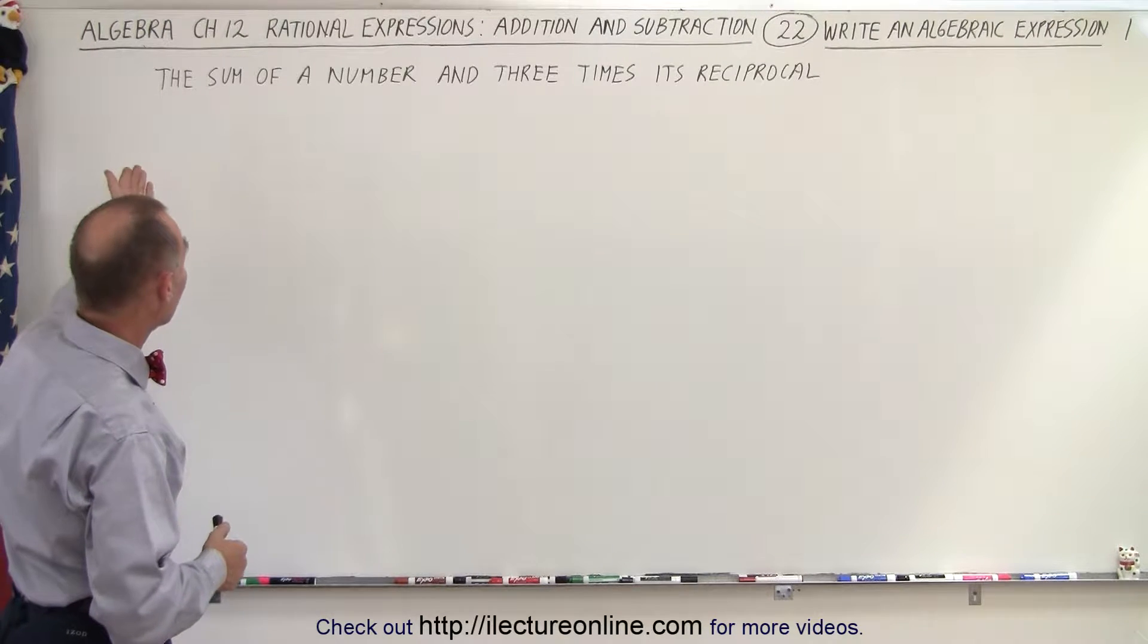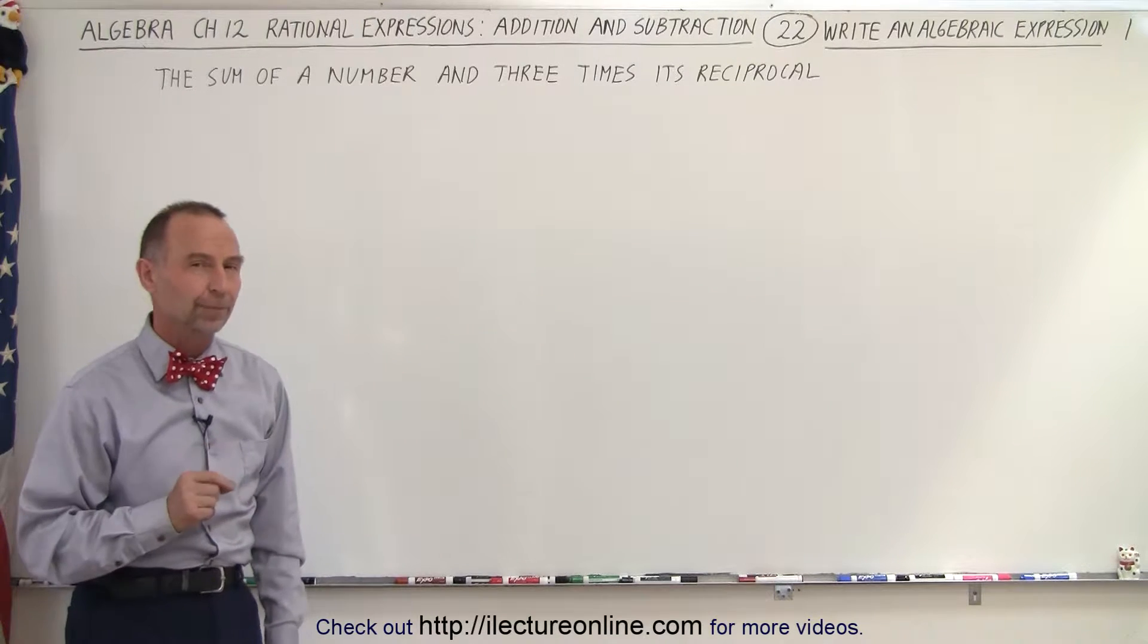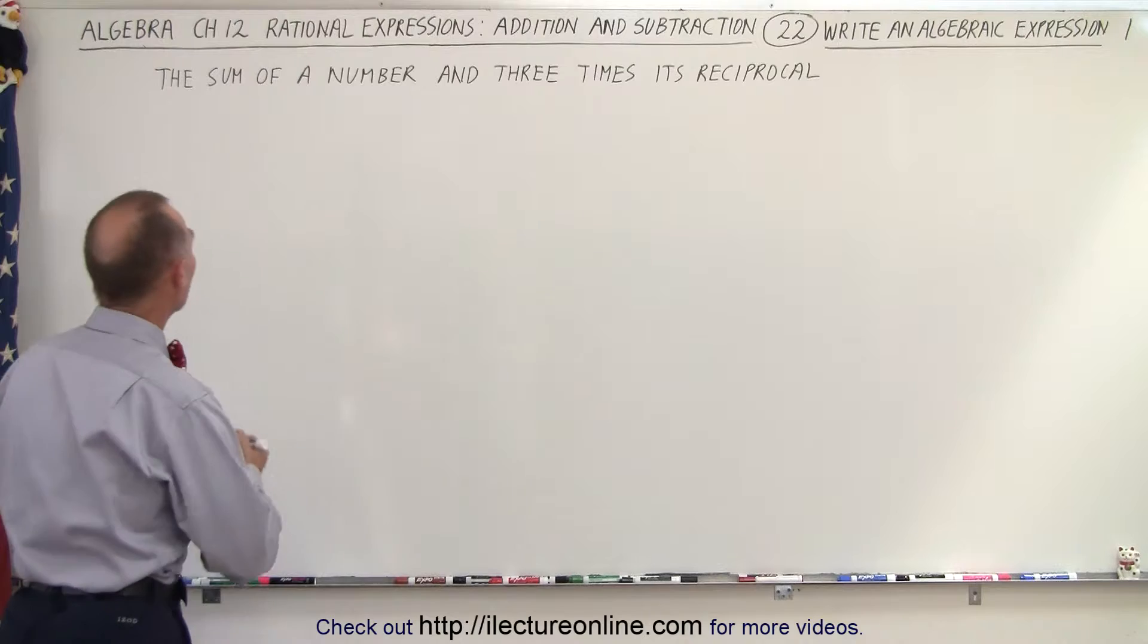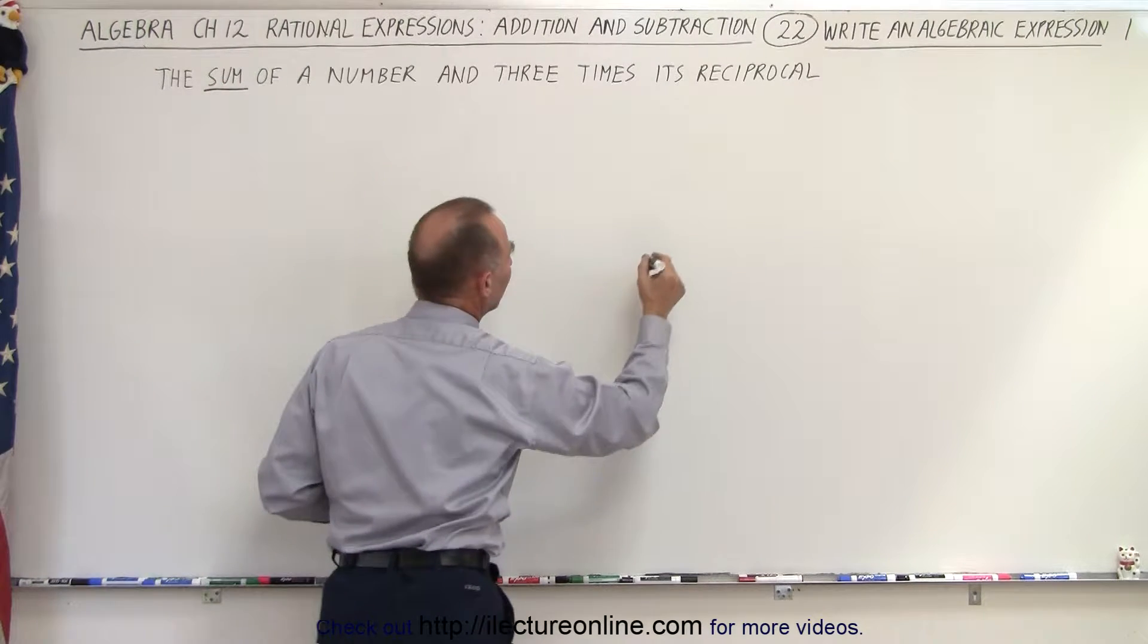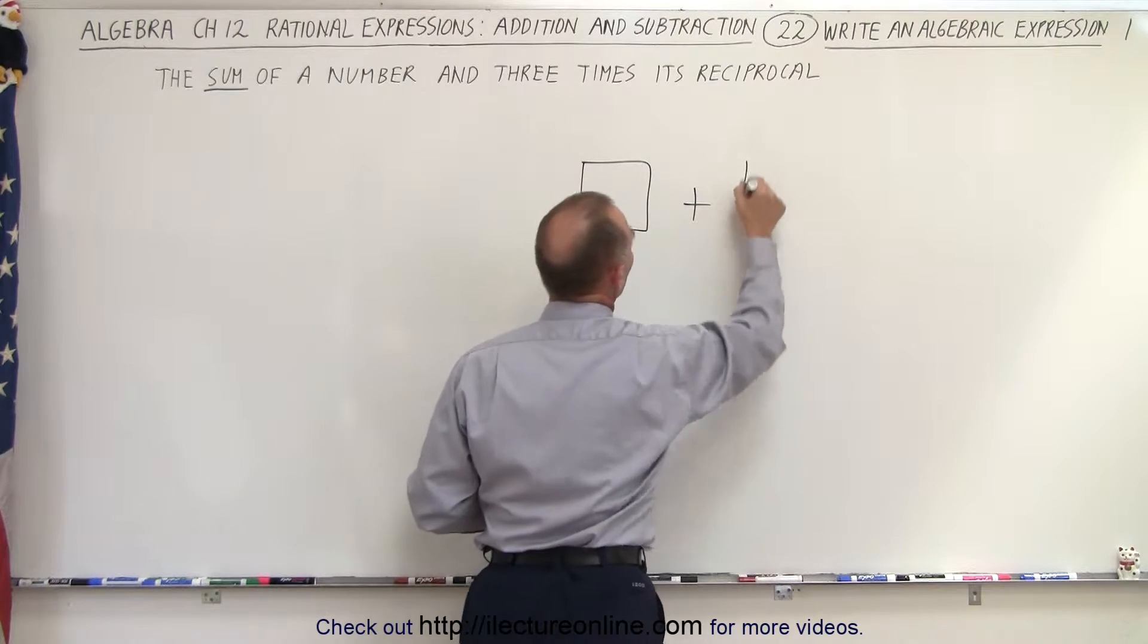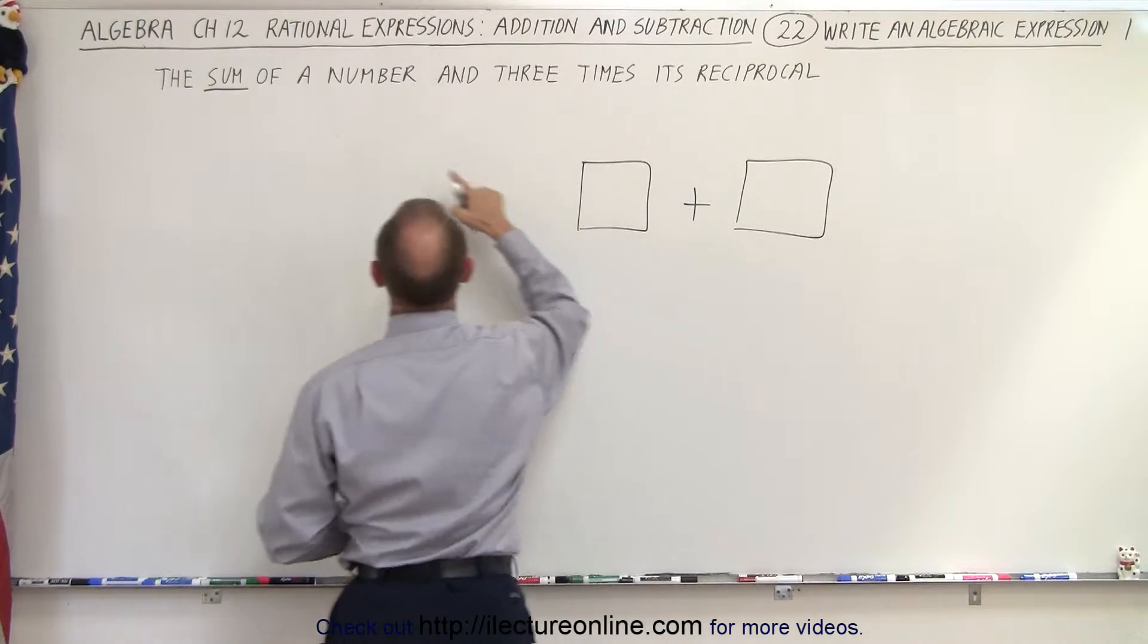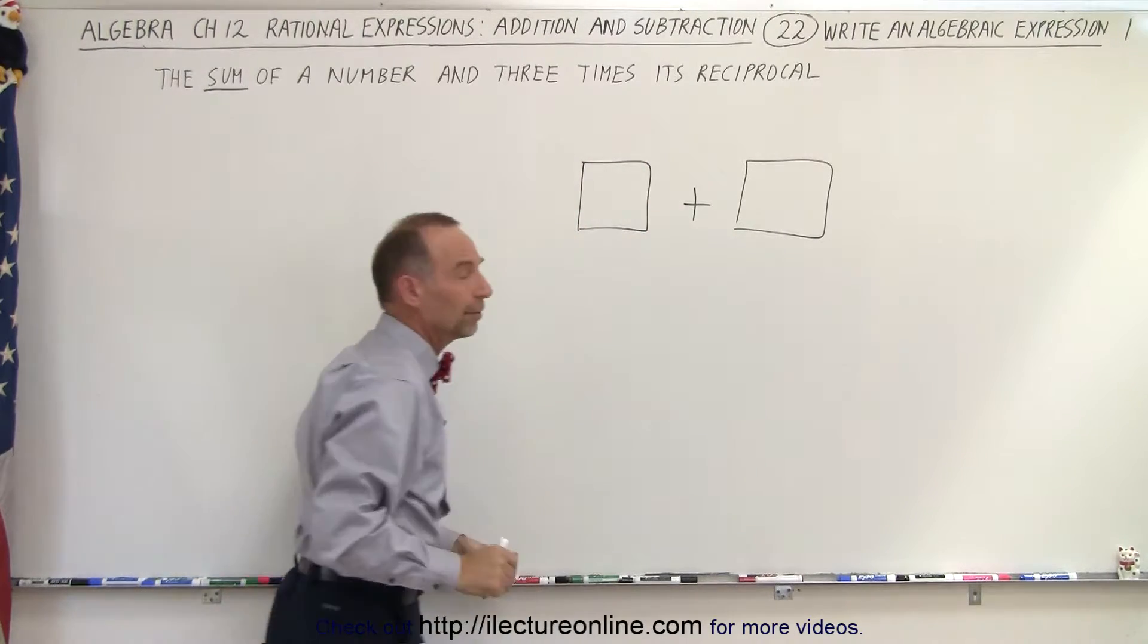So here the sentence says we need to write the sum of a number and three times its reciprocal. So how do we do that? Well, first of all, we find the keyword sum. We're going to sum two things together—something added to something else. There are two things we're going to add together.